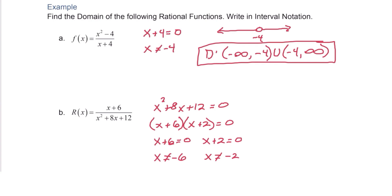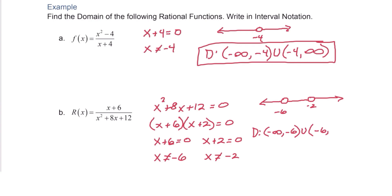If you need help with the interval notation, you can sketch a graph on a number line, excluding the values negative 6 and negative 2. The interval notation will have three separate intervals: negative infinity to negative 6, union negative 6 to negative 2, and finally union negative 2 to positive infinity.